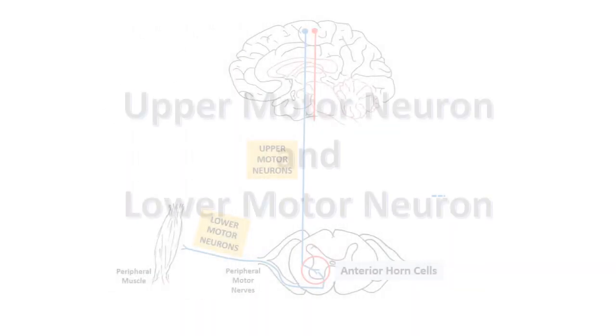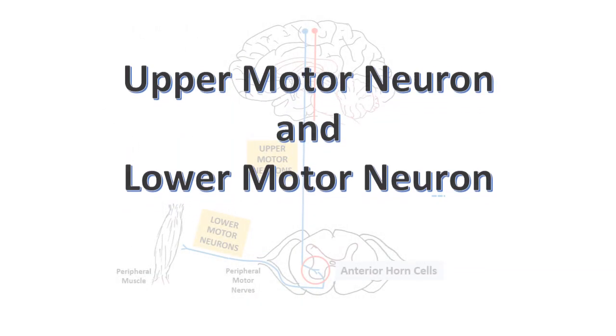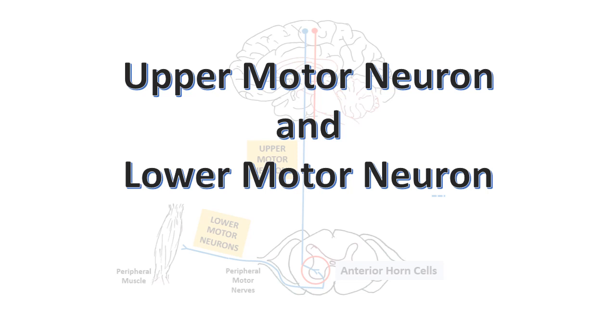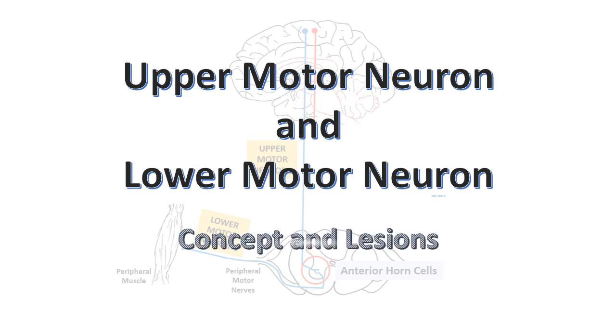Hello friends. The topic for today's video is the concept of upper motor neurons and lower motor neurons and their lesions. Everyone is going to be asked this topic in all exams, whether MCQs, theory, or viva. So for complete understanding, watch the full video. We will study the concept of upper and lower motor neurons and then see what happens in lesions, with reasoning.